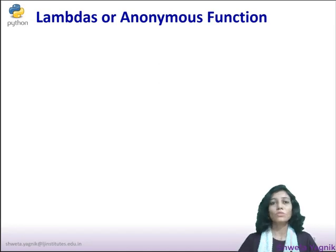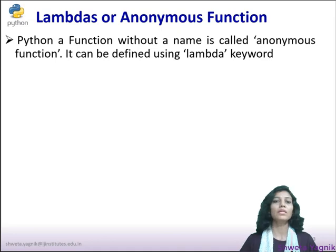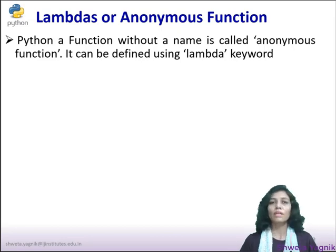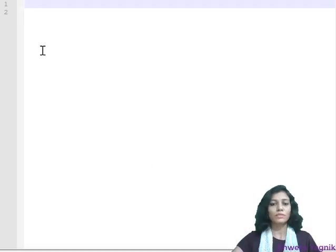Our next topic is lambda, or anonymous function. In Python, a function without a name is called an anonymous function. It can be defined using the lambda keyword. So if you don't want to give a name to a function, you may use an anonymous function. Let's see how to use it.